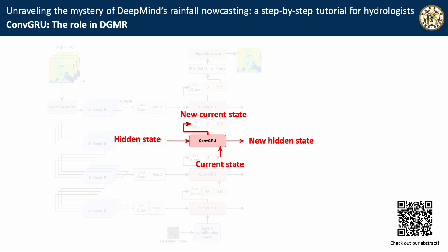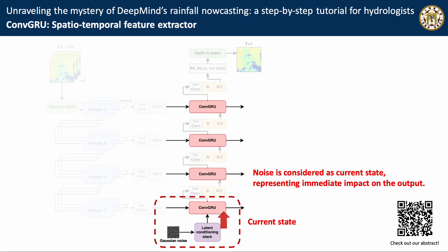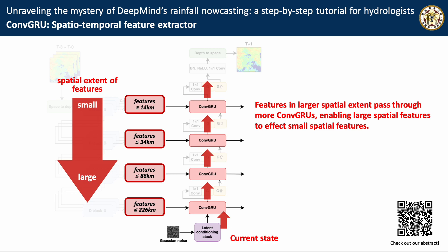This is the flow of inputs and outputs in a convolution gated recurrent unit. The hidden states are passed along the time axis, and the noise is treated as the current state, which represents the immediate impact on the output. Features at larger spatial extents pass through more convolution gated recurrent units, enabling larger spatial extents to make an impact on smaller spatial extents.